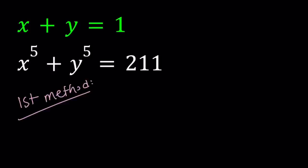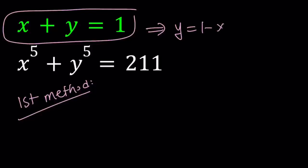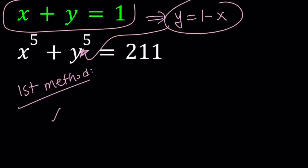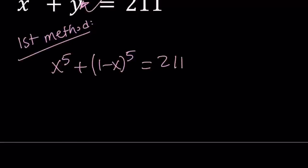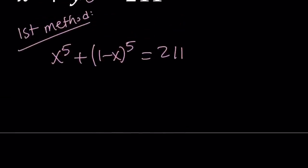For my first method I'm going to use substitution. From the first equation I can write y as 1 minus x and then I can plug it in here. So we get x to the 5th plus 1 minus x to the 5th equals 211. Is this going to give us a quintic equation? The answer is no. It's going to be quartic because x to the 5th minus x to the 5th, they're going to cancel out.